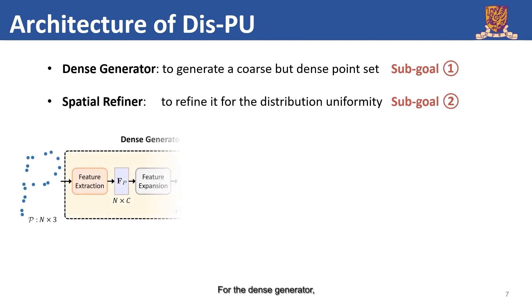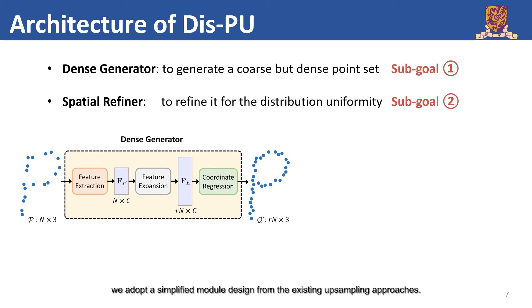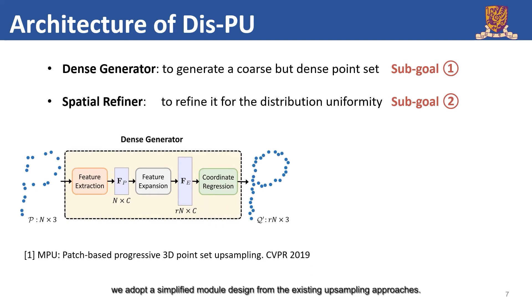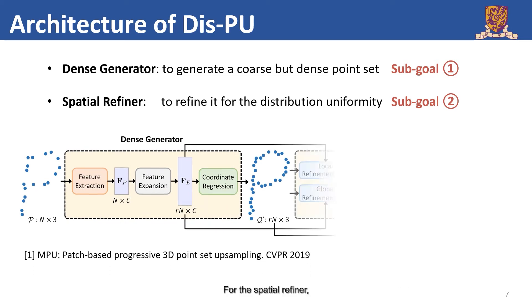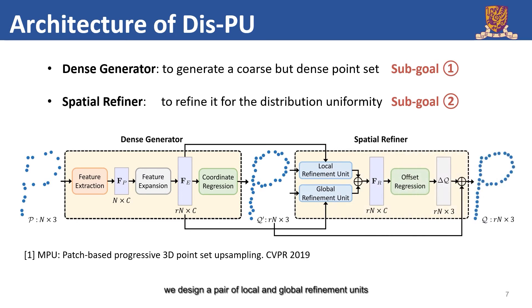For the dense generator, we adopt a simplified module design from the existing upsampling approaches. For the spatial refiner, we design a pair of local and global refinement units to refine the local and global geometric structures respectively.